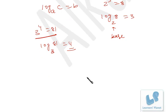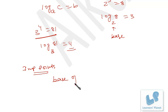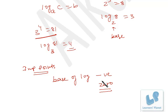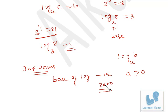Now the important points you have to keep in your mind. As I have discussed regarding the base — the base can be any number, but it cannot be negative and it cannot be 0. For values less than or equal to 0, the base is not defined, or we can say the logarithm itself is not at all defined.